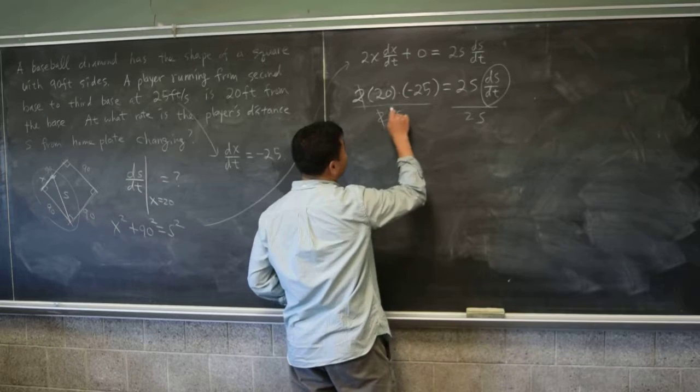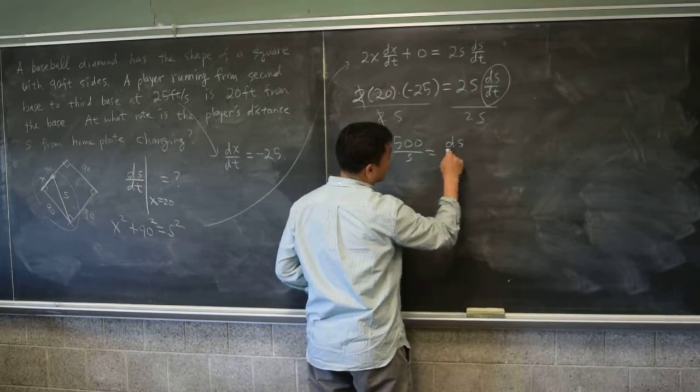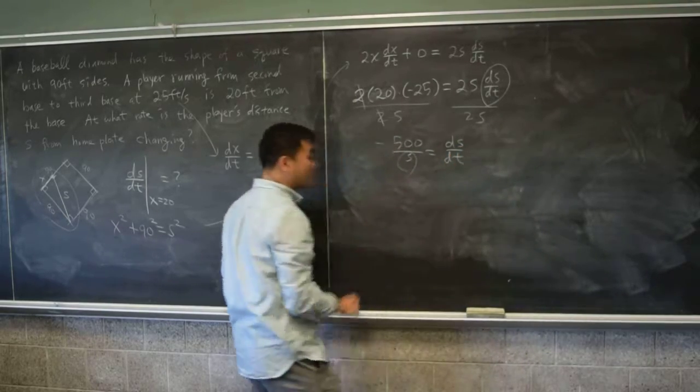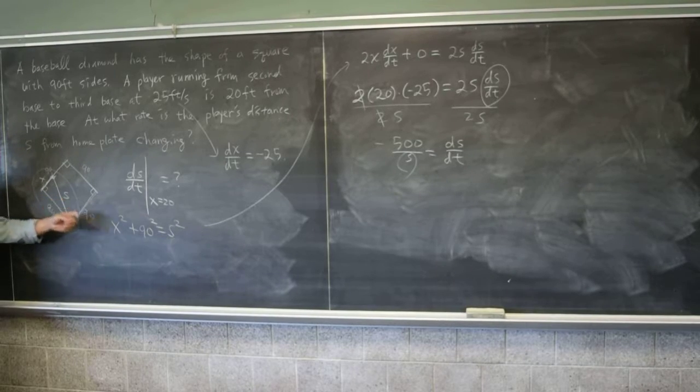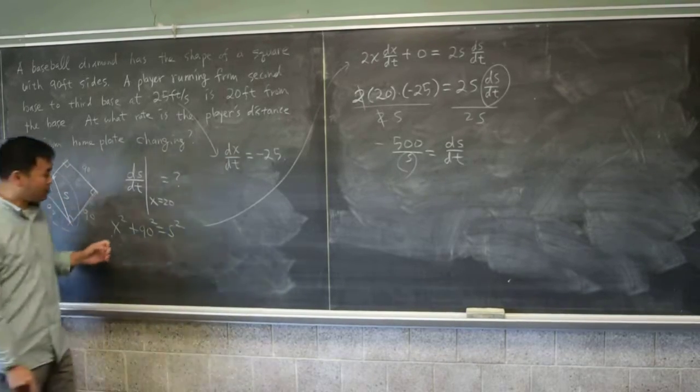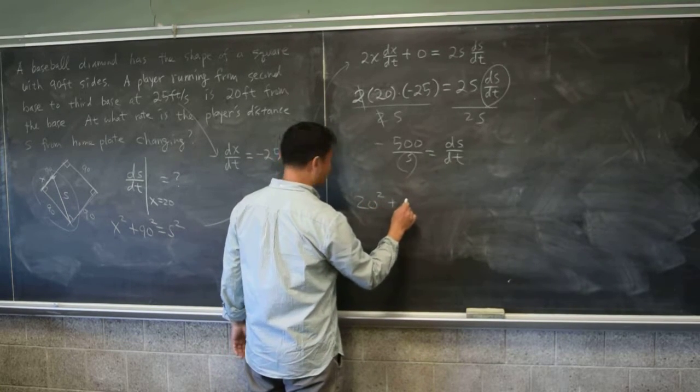So that 2, 2 cancels. And that's negative 500 over s. What do we do about this s? We find the s by... By plugging in here, right? So you have x is 20. When x is 20, the question is what is the s?